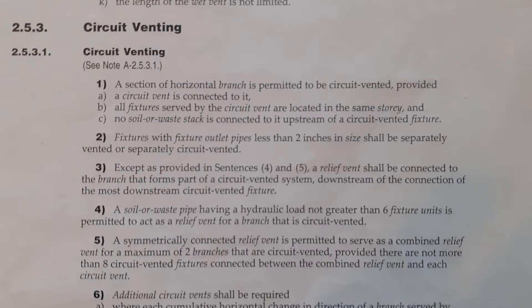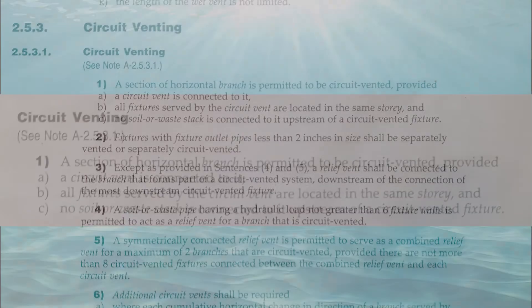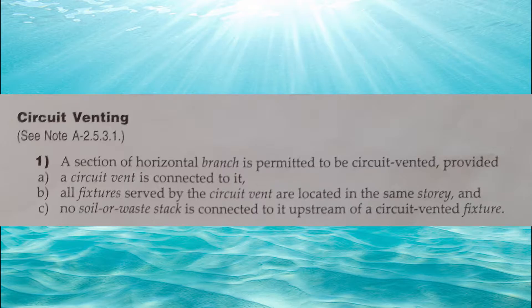As I mentioned we're going to be reading from clause 2531 and it's entitled circuit venting. Part 1. A section of horizontal branch is permitted to be circuit vented, provided a circuit vent is connected to it, all fixtures served by the circuit vent are located in the same story, and no solar waste stack is connected to it upstream of a circuit vented fixture.